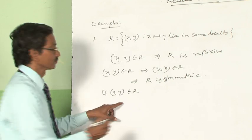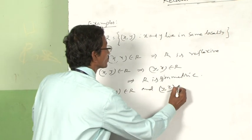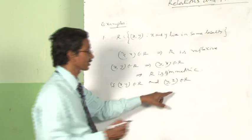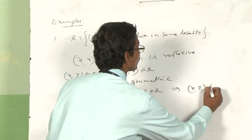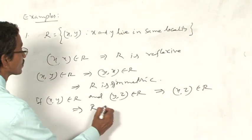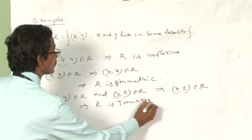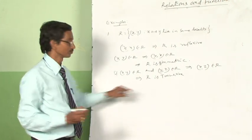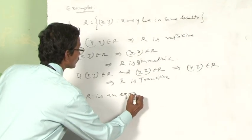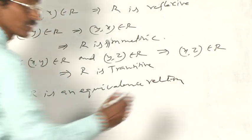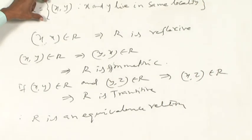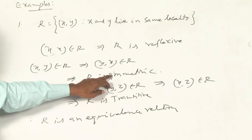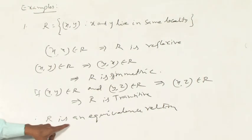If (x,y) belongs to R and (y,z) belongs to R, it means x and y live in the same locality, and y and z also live in the same locality, which implies x and z also live in the same locality. So R is a transitive relation. Since R is reflexive, symmetric, and transitive, R is an equivalence relation. This is the best example for an equivalence relation.